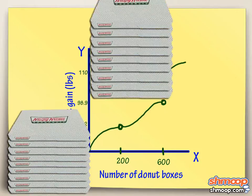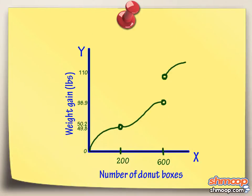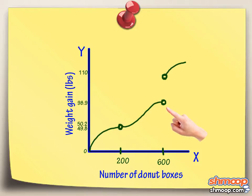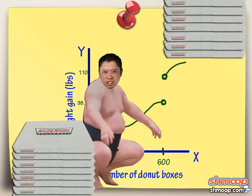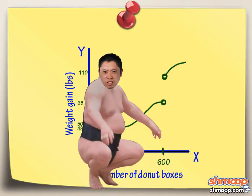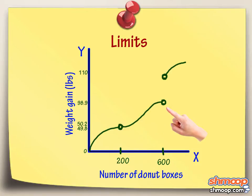He makes it through the whole batch and checks his results. Looks like he forgot to record his weight after 200 boxes and 600 boxes. Instead of doing his experiment all over again and buying another 1,000 donut boxes, he decides to use something called limits to estimate his weight gain at those missing points.